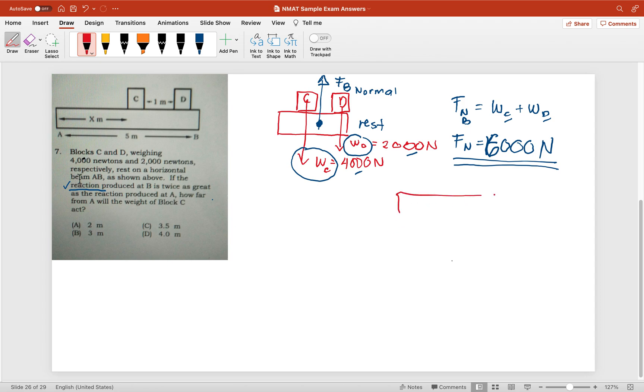this normal force is distributed along point A and point B. Point A has a force, and point B is twice that force. According to the problem, B is twice as great as the reaction produced in A.